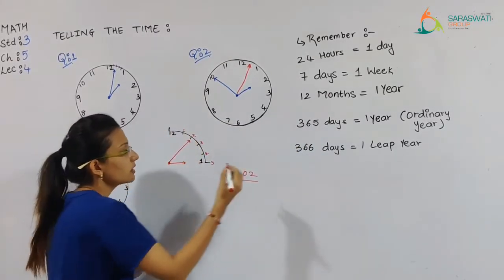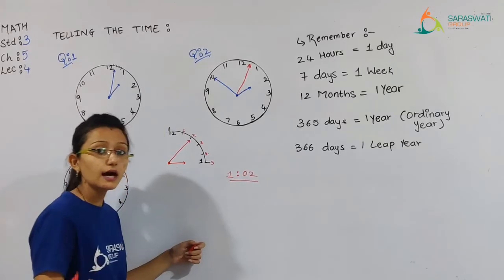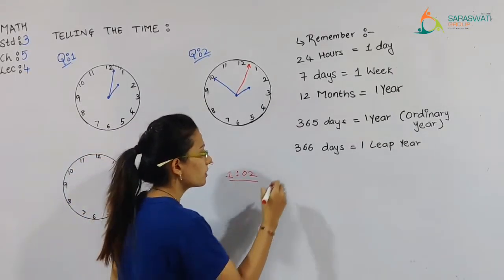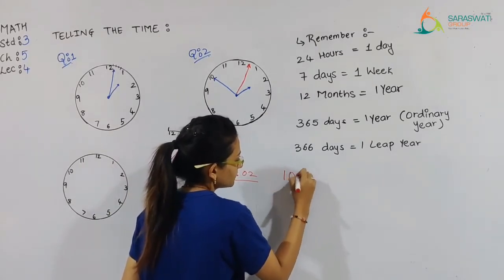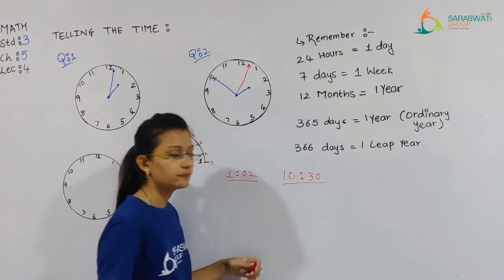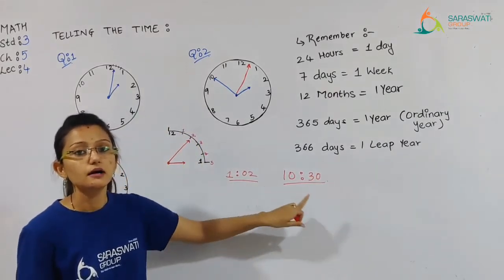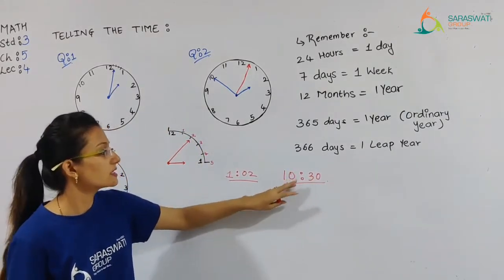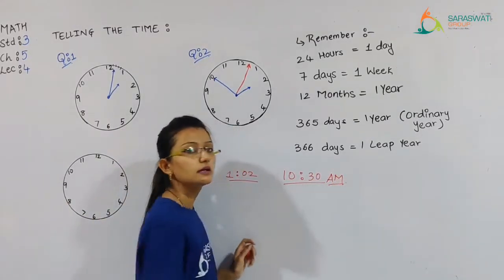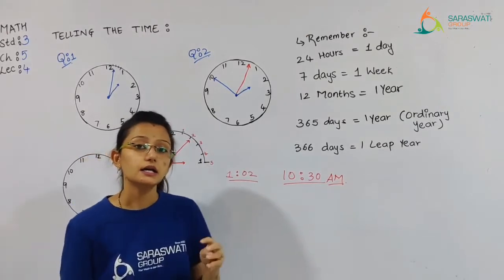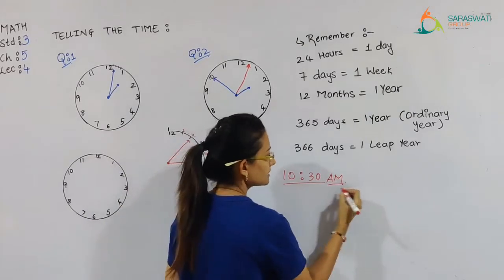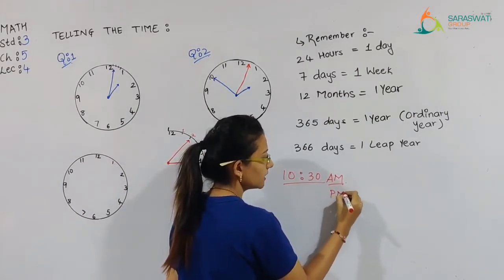On a digital clock, sometimes it shows AM or PM. If it is a 12-hour clock and the time is morning 10:30, then we write 10:30 AM. But if it is 10:30 in the PM — that means night — so it is 10:30 PM.